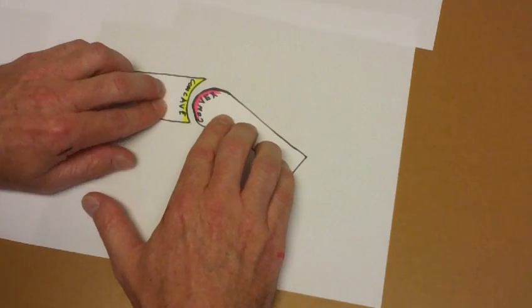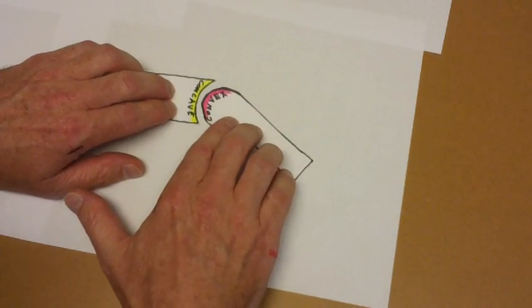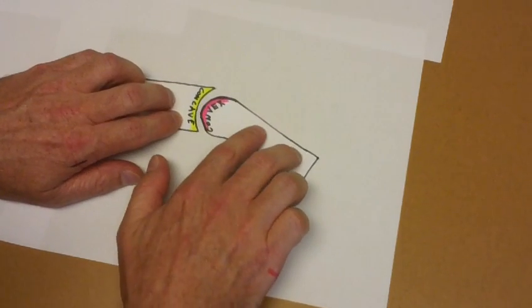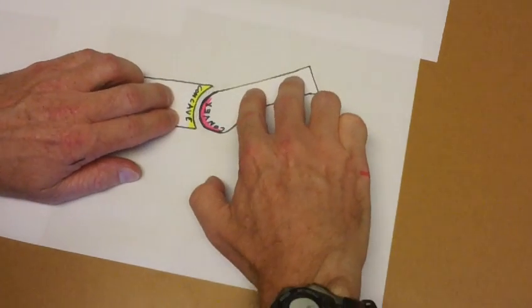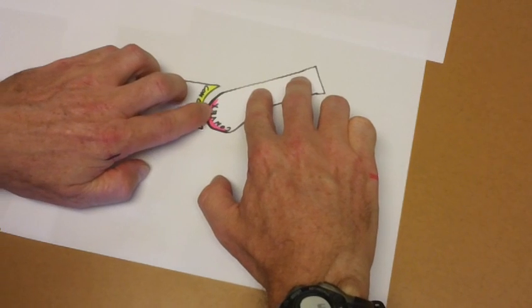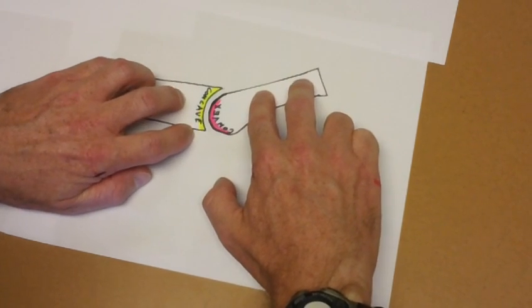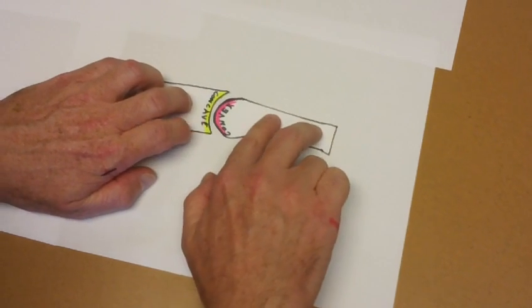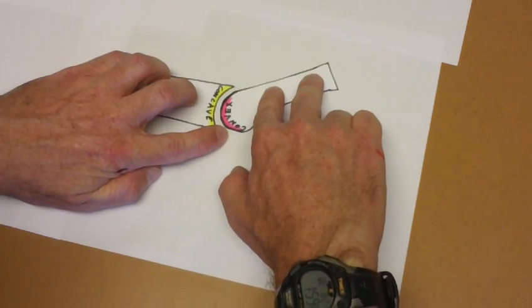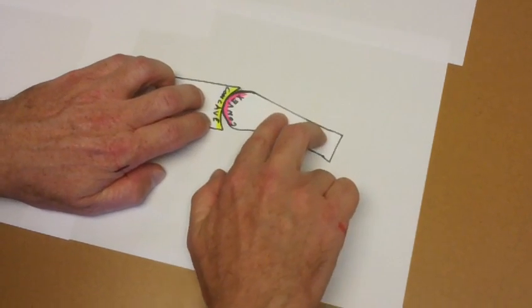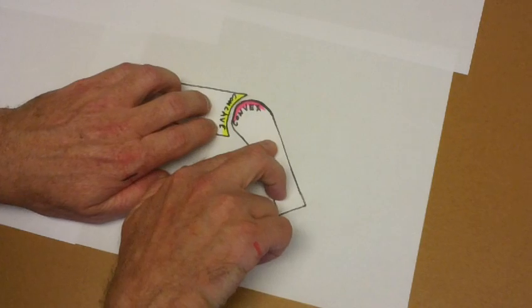Now, if I hold the concave side still and I'm going to move the convex, you're going to notice something a little bit different. As the bone goes up, the convex surface actually moves in the opposite direction. So as the bone goes up, the joint surface moves down. As the bone moves down, the joint surface moves up.